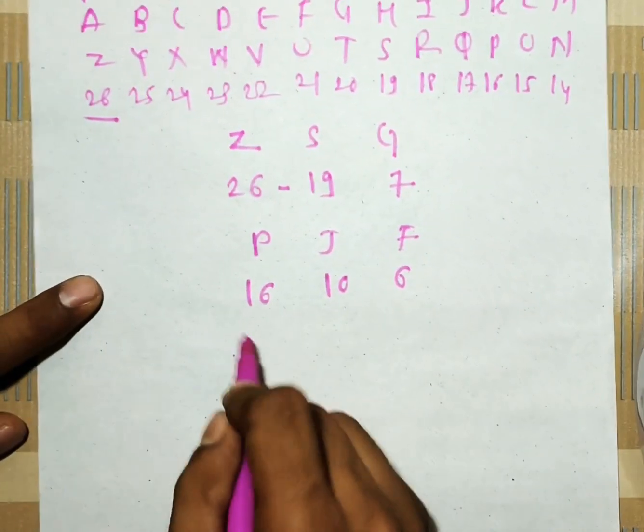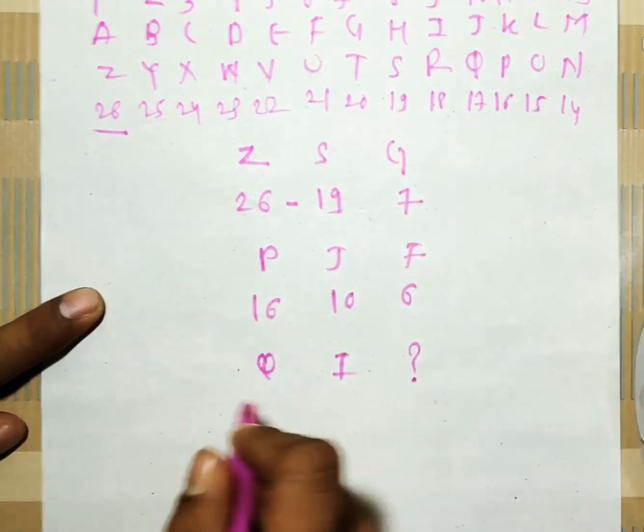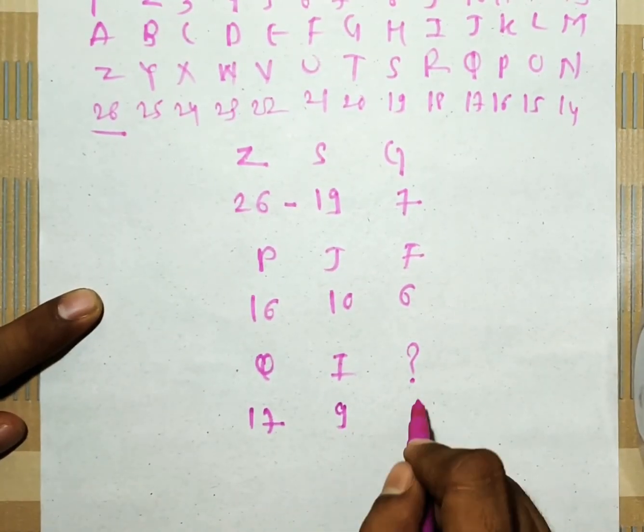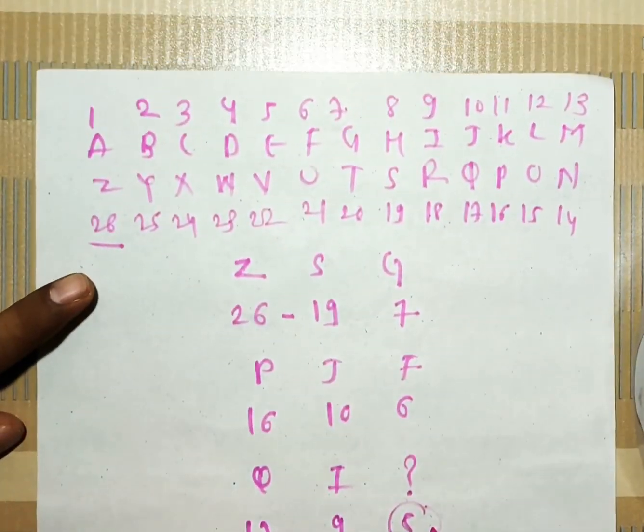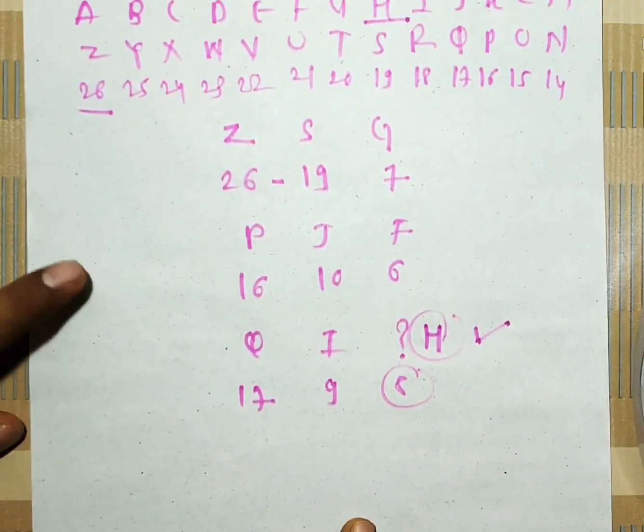So let's see. Q, I and we have to calculate this. So for Q the number is 17, and for I the number is 9. So 17 minus 9, 8 is there. And at 8th position H is there. So the answer will be H. What is the answer?